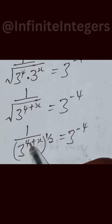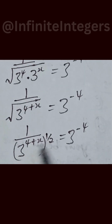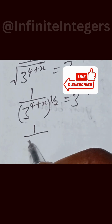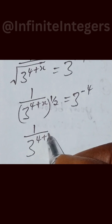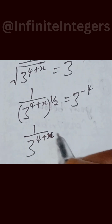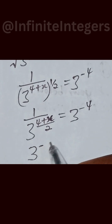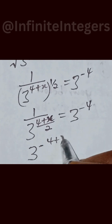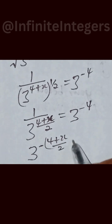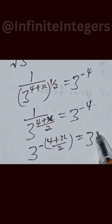We can also put this in the form where we multiply the powers. So we have 1 over 3 raised to power 4 plus x, then multiplied by one half, that becomes over 2, equal to 3 raised to power minus 4. Using the exponent law, this gives us 3 raised to power minus 4 plus x over 2, equal to 3 raised to power minus 4.